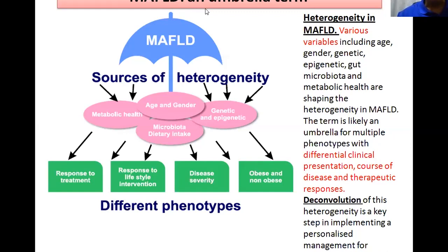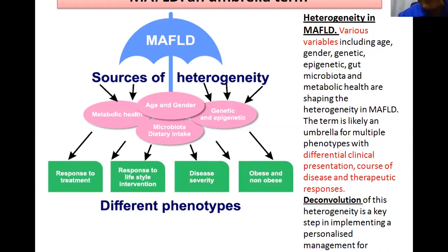We consider MAFLD as an umbrella term. Heterogeneity is present in MAFLD, with various variables including age, gender, genetics, epigenetics, gut microbiota, and metabolic health shaping that heterogeneity. The term is likely an umbrella for multiple phenotypes with differential clinical presentation, disease course, and therapeutic response. Deconvolution of this heterogeneity is a key step in implementing personalized management for patients with MAFLD.